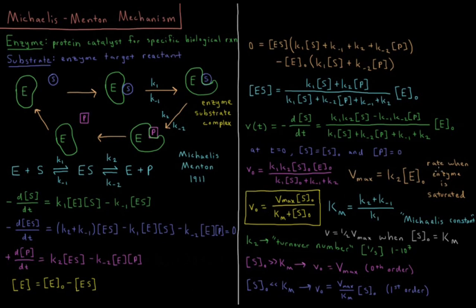Vmax is the maximum rate of this reaction — the rate when the enzyme is saturated. When S0 is much greater than Km, S0 + Km ≈ S0, so Vmax·S0/S0 = Vmax, and V0 equals Vmax. At very high substrate concentration, every available enzyme is working, so the reaction is zero-th order in substrate because all of the enzyme is busy.